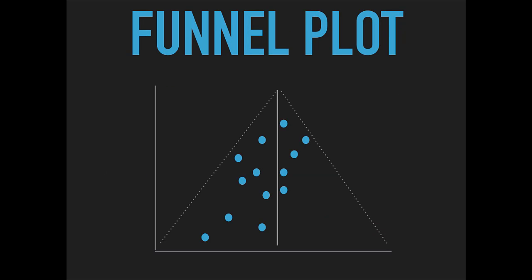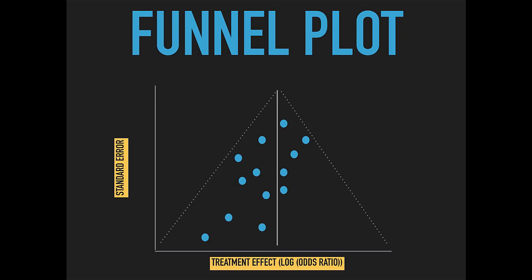A funnel plot is a plot of outcomes from all published studies to ascertain if publication bias is present. A study's size or standard error is on the y-axis, and the treatment effect — i.e., the logarithm of odds ratios — is on the x-axis. An asymmetrical shape suggests publication bias is present, as larger studies have more accurate estimates of the true treatment effect.